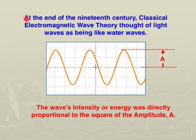Some historical background to this photoelectric effect. At the end of the 19th century, classical electromagnetic wave theory thought of light waves as being like water waves. Water waves like this. And that's the amplitude. The wave's intensity, or the wave's energy, was directly proportional to the square of the amplitude A. So if you double the amplitude, you increase the energy four times.